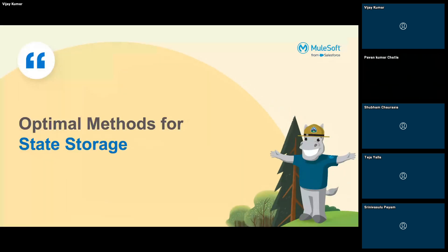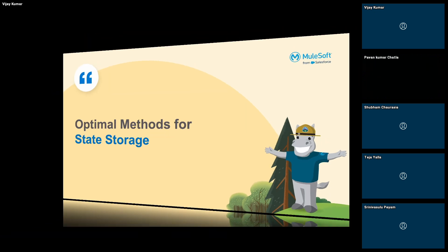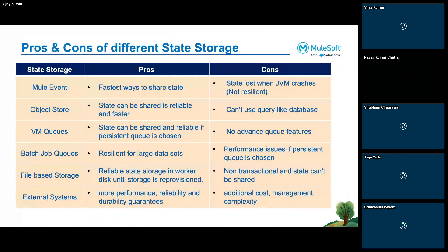Moving on: we have different ways to manage state, and when designing our solution we can choose based on requirement to optimize. For Mule event, the pro is that it is the fastest way to share state since it is stored in the JVM heap which is in-memory. The con is that since it is in-memory it is not reliable — as soon as the JVM crashes or the flow completes, the state will be lost and cannot be shared with other applications. Use Mule event if you only need to share state within the flow.